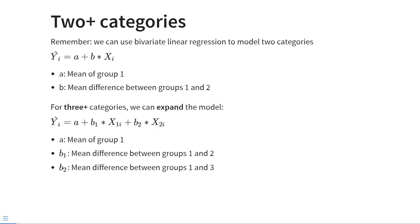Let's recap all we've learned until now. You previously learned how to use bivariate linear regression to model the difference between two categories, and all you have to do is include a dummy variable as the predictor. Then last week we learned how we can incorporate a categorical predictor with three or more categories by expanding the model and including multiple dummy variables that code for membership of the different groups.